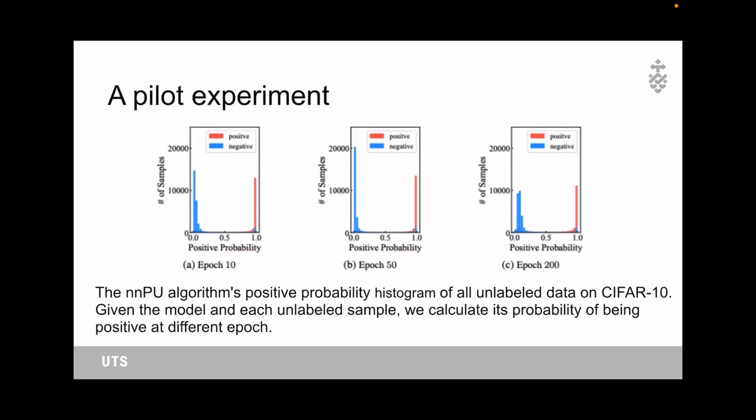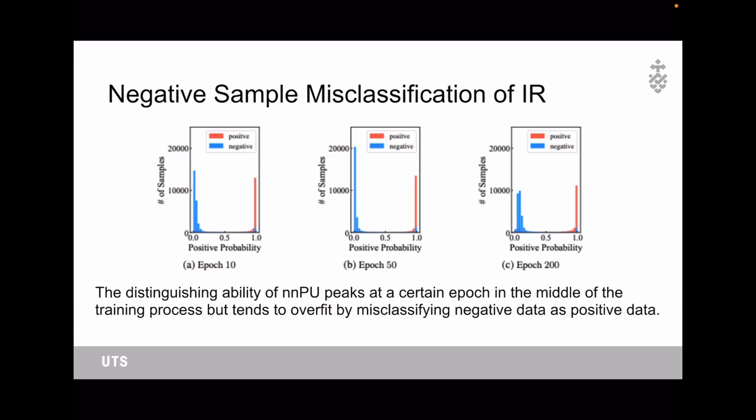Here is a pilot experiment to demonstrate the overfitting problem of the importance-reweighting methods. As you can see, this is the NNPU algorithm's positive probability histogram of all unlabeled data on CIFAR-10. Given the model and each labeled sample, we can calculate its probability of being positive at different epochs. From epoch 10 to epoch 50, the model is getting better and better at distinguishing positive and negative samples.